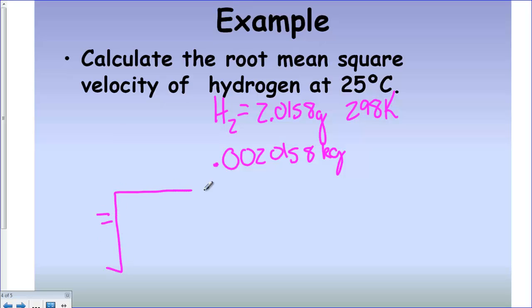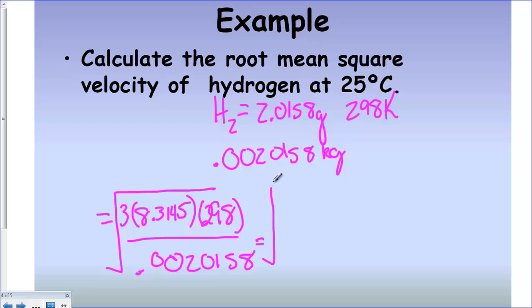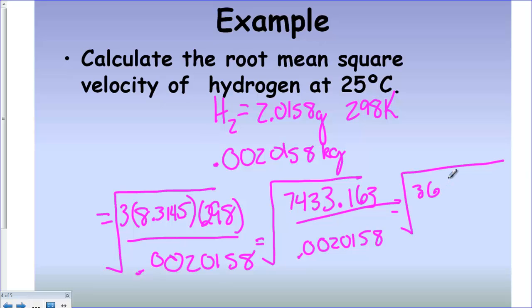So we're going to set up our equation just like we did on the other problem. We got 3 times 8.3145 times temperature, which is 298, and then we're going to divide that by the molar mass in kilograms. Now I'm going to solve it in steps just like I did on the other problem. So the top is still the same as the previous problem because we haven't changed temperature here, and that's basically the only variable that affects the top from problem to problem. And then, of course, we have a different molar mass. I get this big long number under the radical, and when I solve, I get the root mean square velocity at 1920 meters per second.